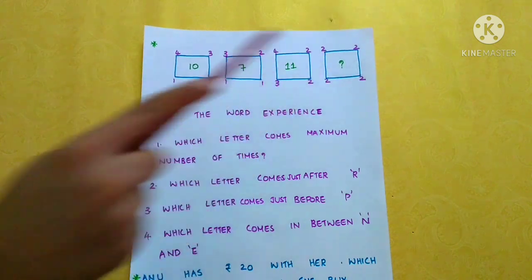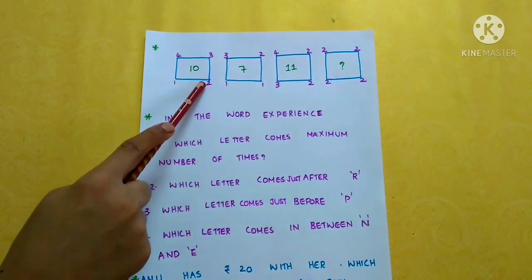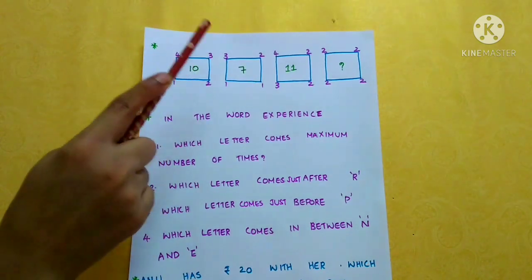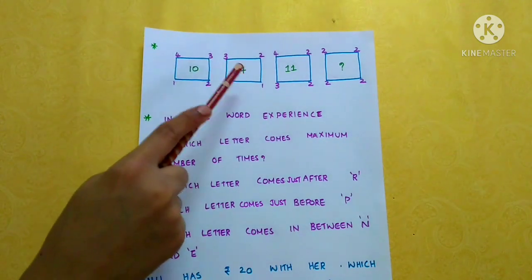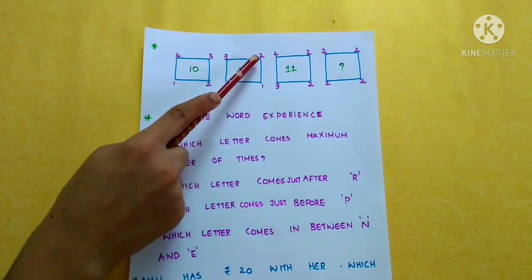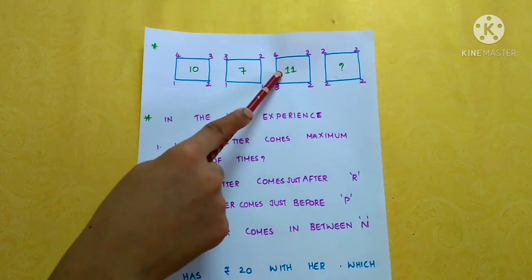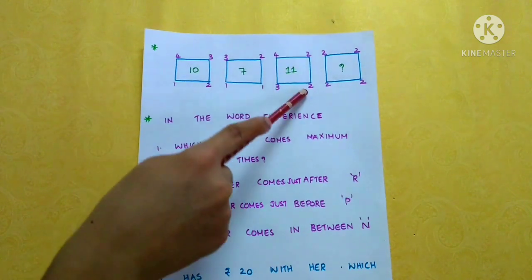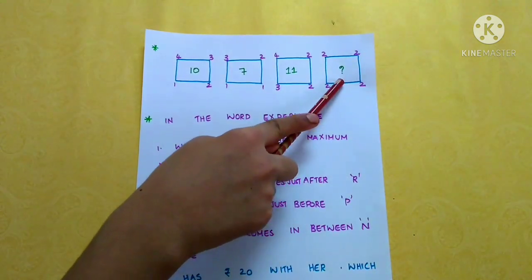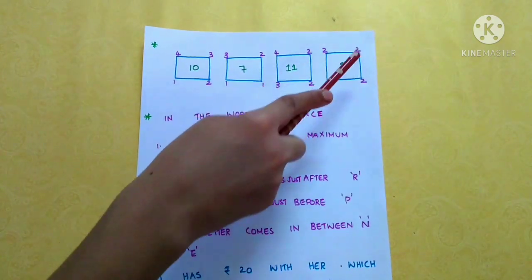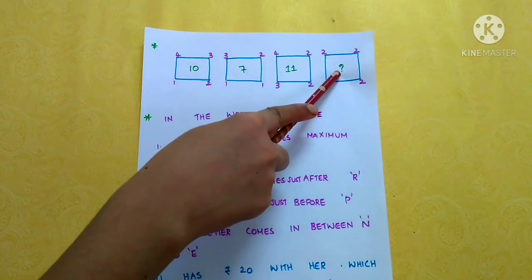What comes in place of the question mark? If we look closer, we can see that if we add the numbers in the 4 corners outside the square, we will get the center value. 4 plus 3 equals 7, 7 plus 2 equals 9, 9 plus 1 equals 10. Next: 3 plus 2 equals 5, 5 plus 1 equals 6, 6 plus 1 equals 7. Next: 4 plus 2 equals 6, 6 plus 2 equals 8, 8 plus 3 equals 11. For the question mark: 2 plus 2 equals 4, 4 plus 2 equals 6, 6 plus 2 equals 8. So 8 is the number that will replace the question mark.